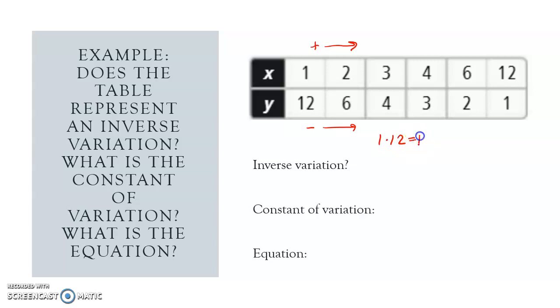1 times 12, I get 12. 2 times 6, I get 12. 3 times 4, I get 12. And then I notice these are just the same products in the other order: 4 times 3 is 12, 6 times 2 is 12, and 12 times 1 is 12. So yes, this is inverse variation. The constant of variation is 12. The equation is x times y equals 12, or if we solve that for y, it's y equals 12 divided by x. This is the equation for this inverse variation.